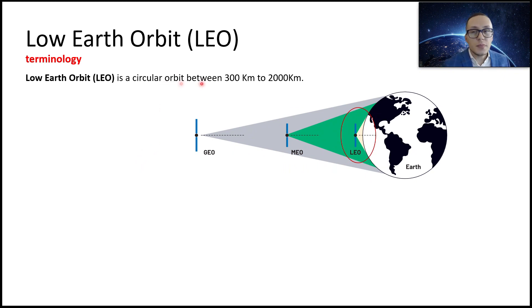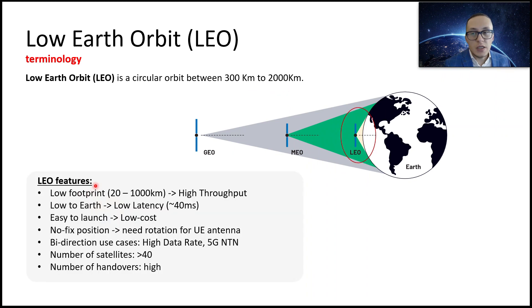A low earth orbit is something between 300 kilometers to 2,000 kilometers. It has features with relatively low footprint, just about that type of kilometers. That reflects in high throughput abilities. Because of the distance between satellite and the earth is not so high, it allows to get services with relatively low latency. It is easy to launch.